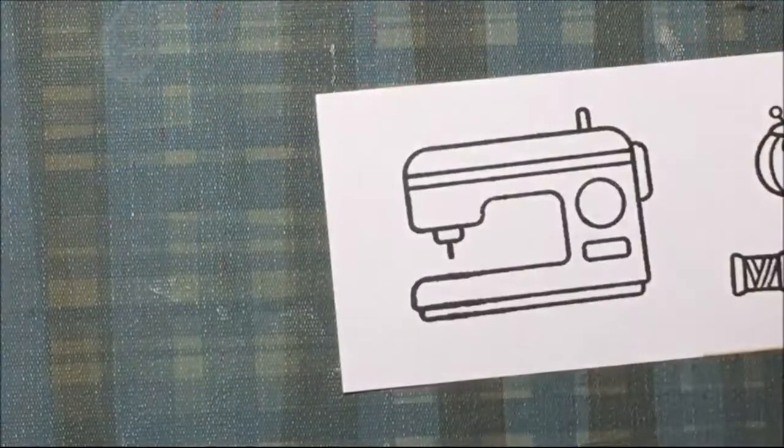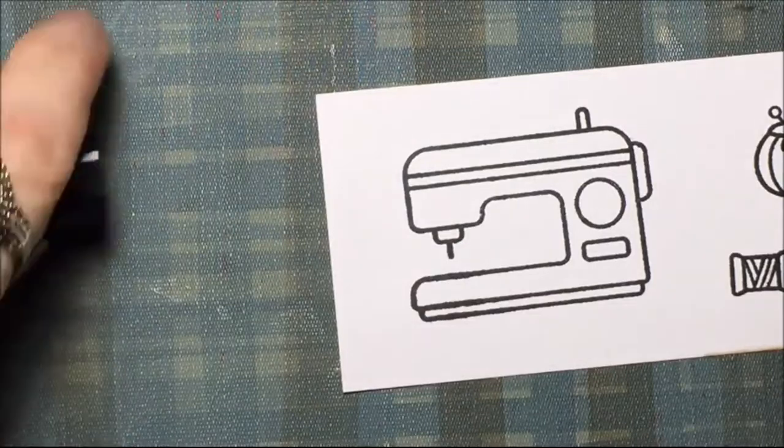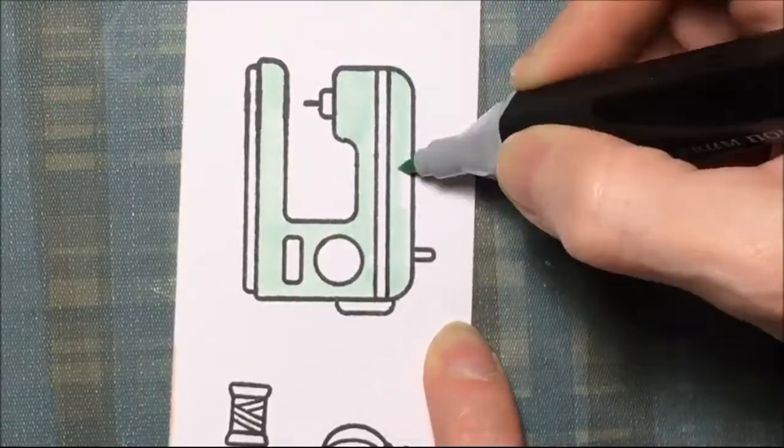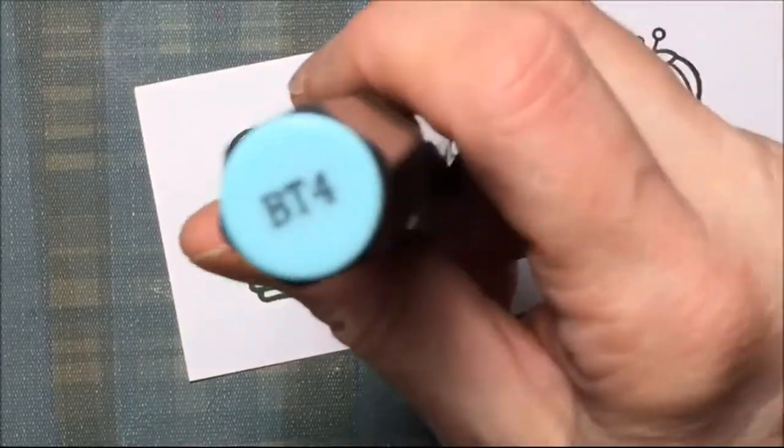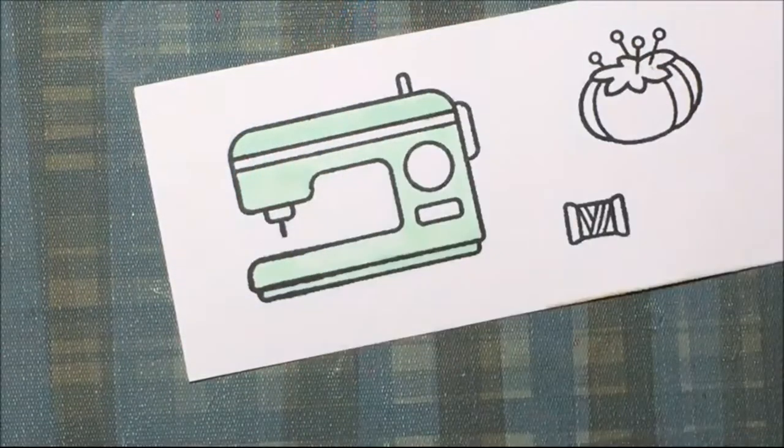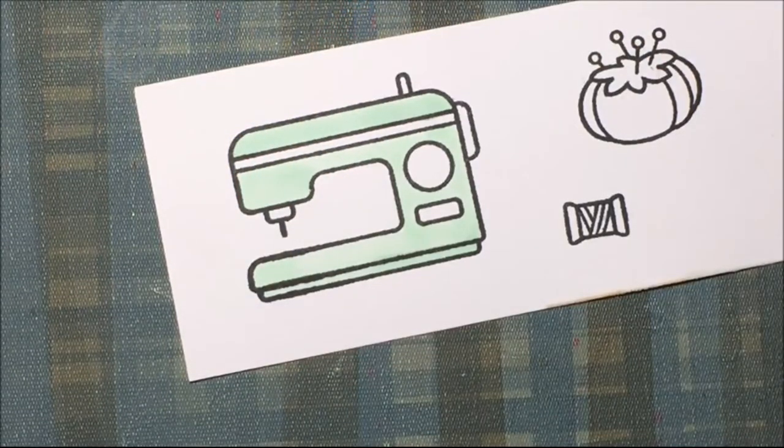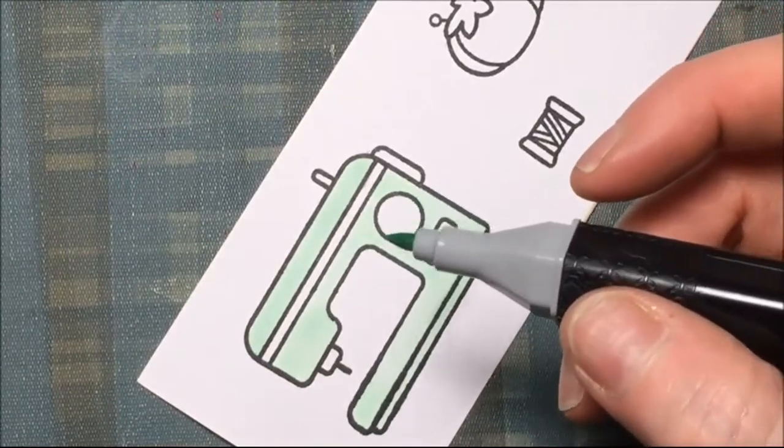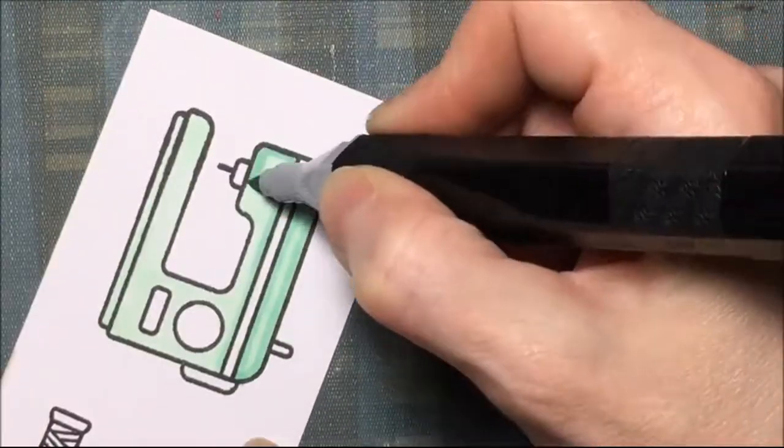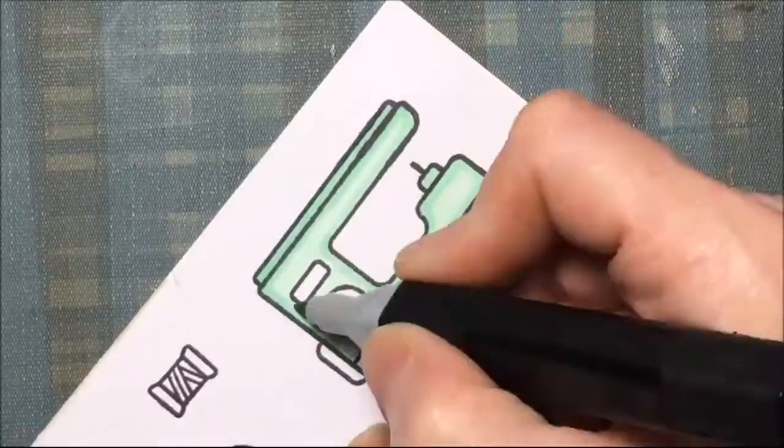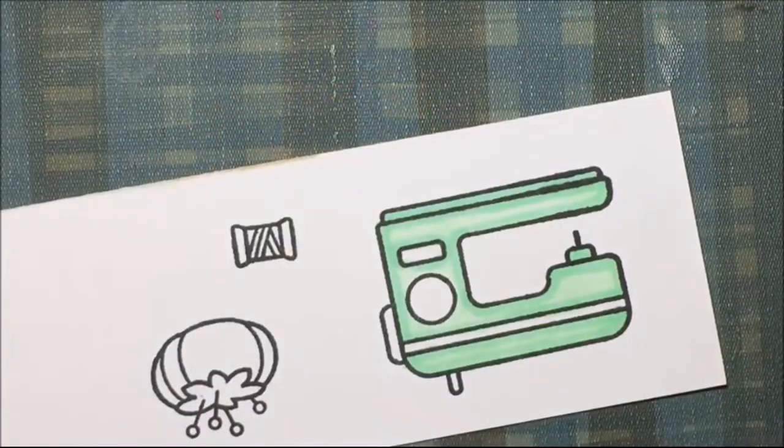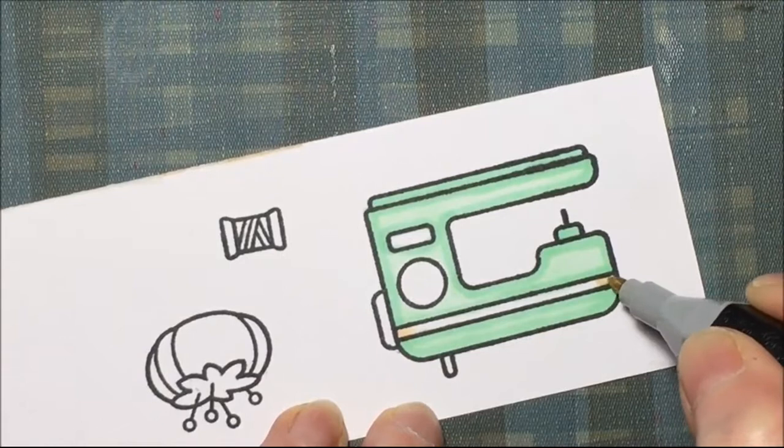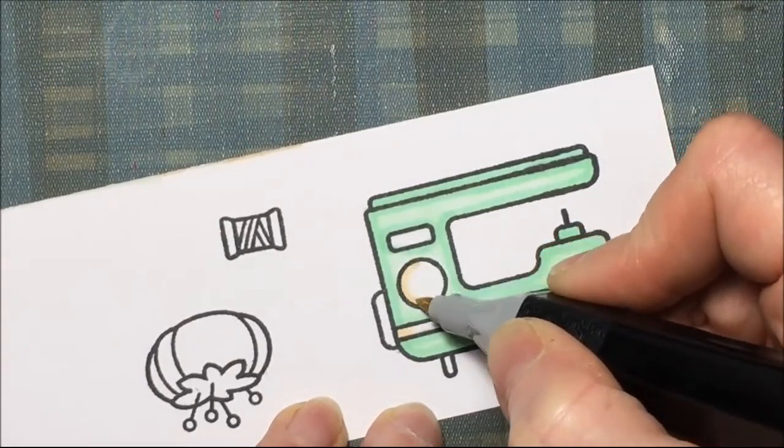I'll be coloring the sewing machine with Spectrum Noir Markers, and that's BT2. Then I'll be taking a darker color, BT4, and I outline the sewing machine and the little elements to give it kind of a shadowing effect. The next color I'll be using is EB1, kind of like a creamy type color, and I just want to use that to emphasize the white areas of the sewing machine.